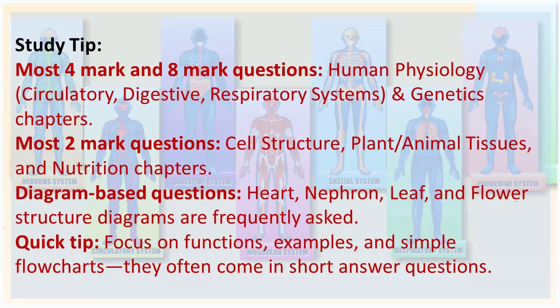Study tip: most four-mark and eight-mark questions come from human physiology — circulatory, digestive, and respiratory systems — and genetics chapters. Most two-mark questions appear from cell structure, plant or animal tissues, and the nutrition chapters. Diagram-based questions frequently occur from heart, nephron, leaf, and flower structures. Focus on functions, examples, and simple flowcharts for short answer questions.